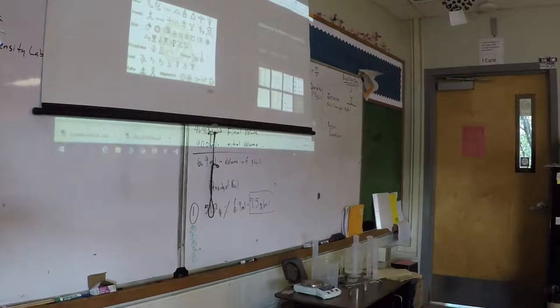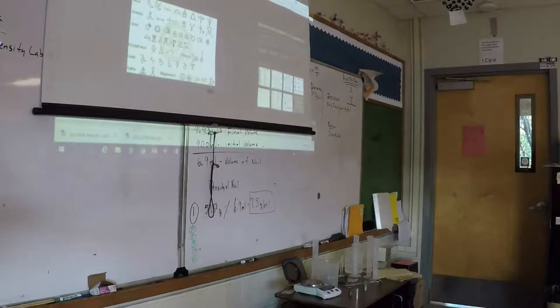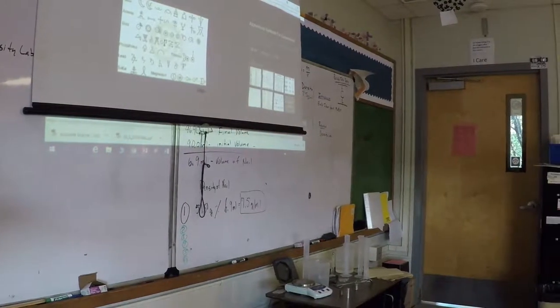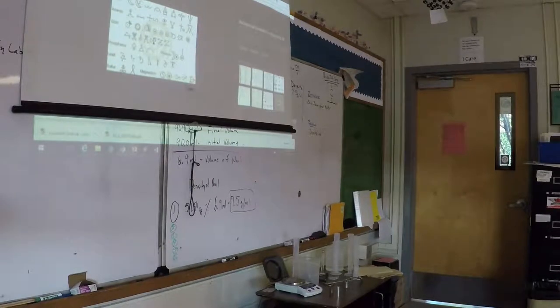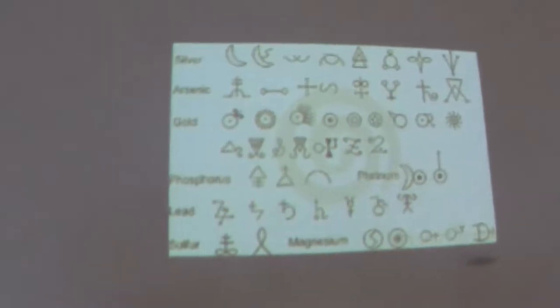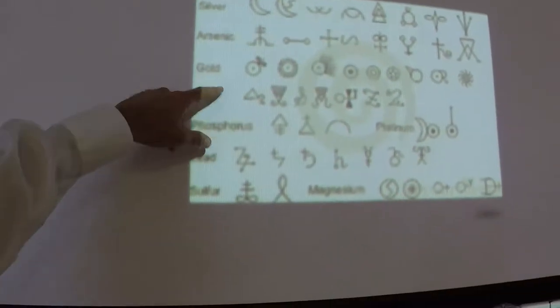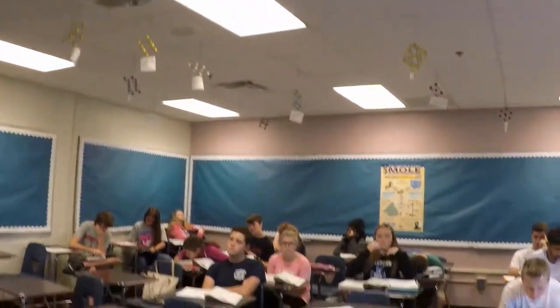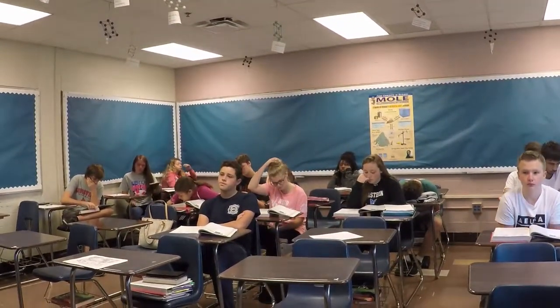It wasn't really a new way to do things. If you go back to ancient Greece and Egypt, you can see all sorts of symbols for various words — like silver has all these different symbols associated with it, and gold as well.